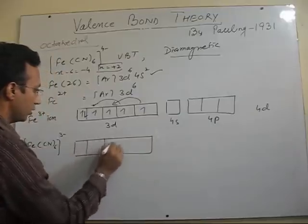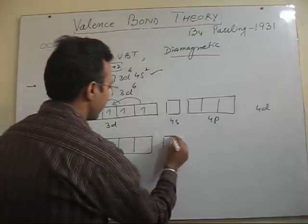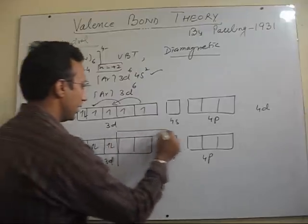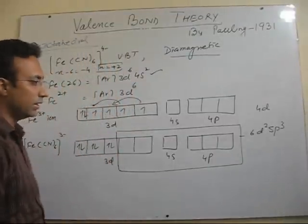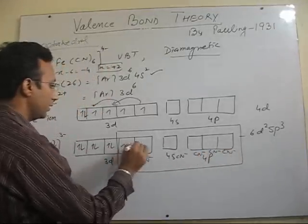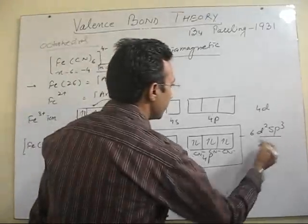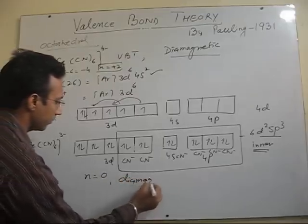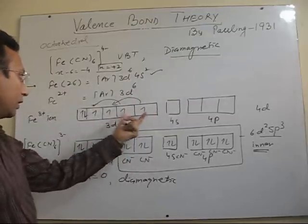As a result, the 2 inner d orbitals are empty and all others are paired. The 4s and 4p are also empty. In total we have 6 empty orbitals but of different energy, so they must get hybridized first before accepting lone pairs from the ligands. We again get 6 d²sp³ hybridized orbitals. In all 6 hybridized orbitals, the cyanide ions donate their lone pairs to form 6 metal-ligand bonds. The hybridization is d²sp³ — an inner d orbital complex — with 0 unpaired electrons; therefore the complex is diamagnetic.